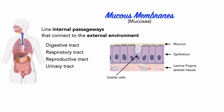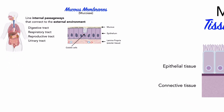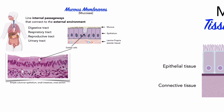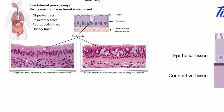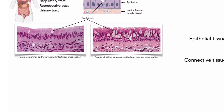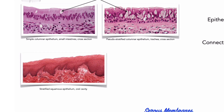Because mucous membranes involve epithelia, it should not be surprising to find a variety of epithelial types lining mucous membranes. For example, there are mucous membranes with simple columnar epithelia, such as the goblet or mucous-secreting cells lining the small intestines. There are also mucous membranes with pseudostratified columnar epithelia, like those lining the trachea or windpipe. The oral cavity's mucous membranes possess a stratified squamous epithelium, which is kept moist with mucous produced by numerous salivary glands.